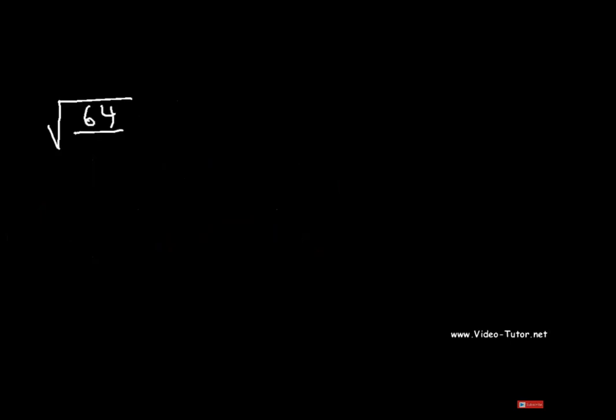Now, dividing radical expressions. For √(64/81), simply find the square root of numerator and denominator: we get 8/9.